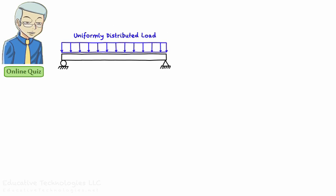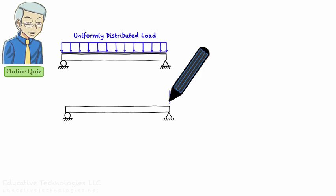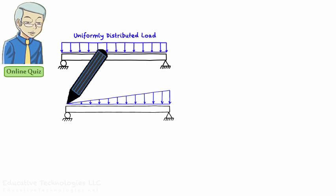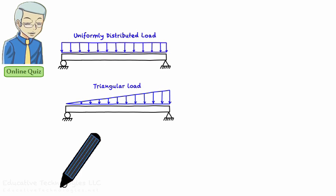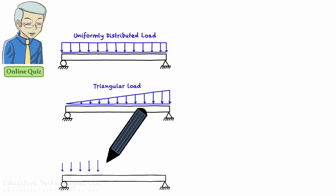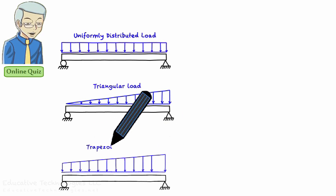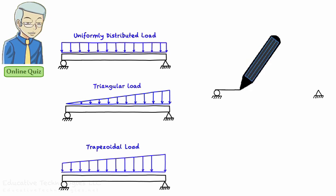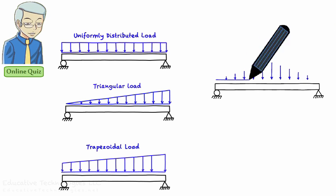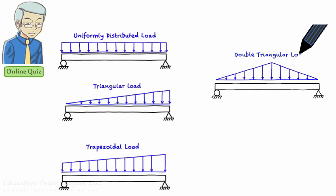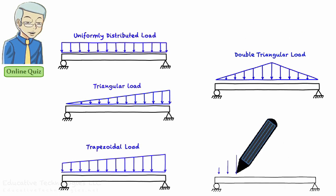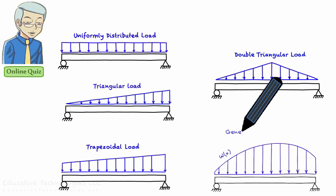A uniformly distributed load is a constant load — the load magnitude does not change over the length of the beam. A triangular load has a magnitude that changes linearly with a constant slope. A trapezoidal load can be viewed as a linear combination of a uniformly distributed load and a triangular load. A double triangular load, or a generalized distributed load, where the load magnitude is defined using an algebraic function.